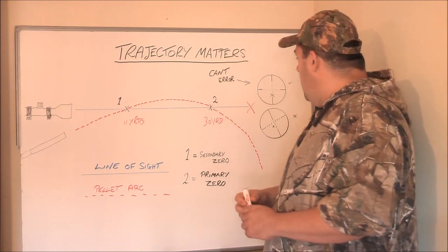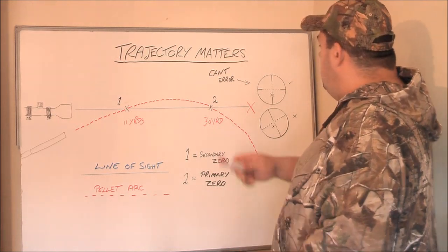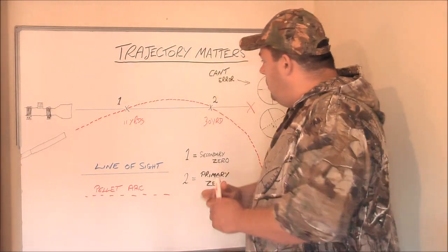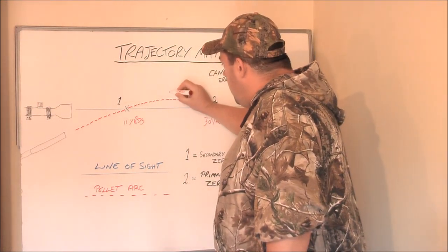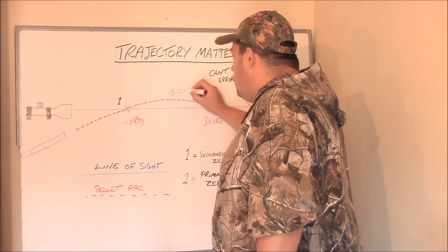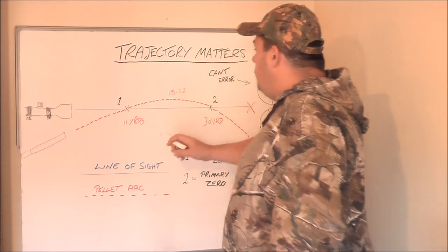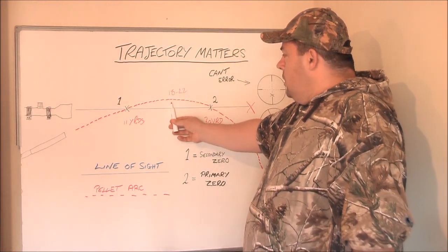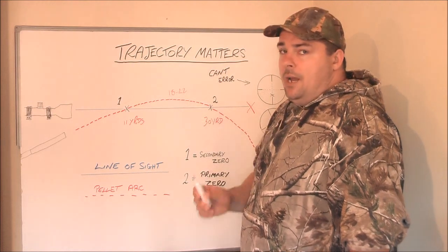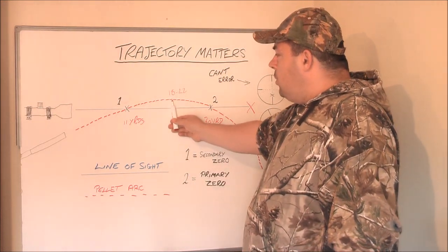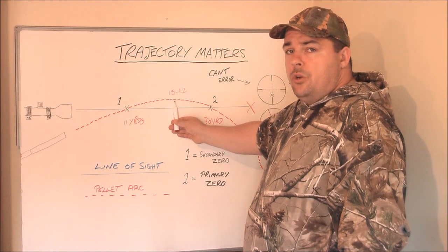So for a portion of that between 11 yards and 30 yards, your secondary and primary zero, the pellet will now be travelling above the scope crosshair. In this area here you will be required to hold under. And by hold under I mean if your target is lets say 18, 18 or 22 yards, which should be roughly in the centre here somewhere, you might, depending on your pellet speed and weight, you may be required to hold under by 1 or 2 mil dots.